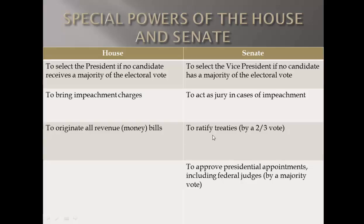The president can make treaties, but before a treaty is valid — before it is ratified — it has to go through the Senate. Any deal the president makes does not become a valid treaty until two-thirds of the Senate agree to it. The president also appoints federal judges, Supreme Court judges, cabinet positions, and ambassadors to foreign countries. Those people do not get the job until the Senate agrees. So the House has its special privileges, and so does the Senate.